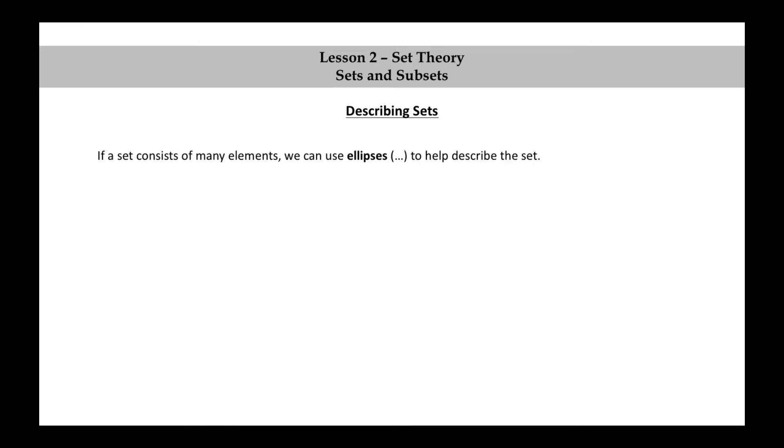If a set consists of many elements, we can use ellipses to help describe the set. Example: The set consisting of the natural numbers between 17 and 5,326 inclusive can be written as follows: the set consisting of 17, 18, 19, followed by some ellipses, 5,325, 5,326.